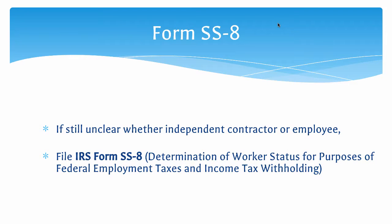If it is still unclear whether a worker is an employee or independent contractor, you may file Form SS-8, Determination of Worker Status for Purposes of Federal Employment Taxes and Income Tax Withholding, with the IRS. This form is to request a determination of the status of a worker under the common law rules for purposes of the federal employment taxes and income tax withholding.